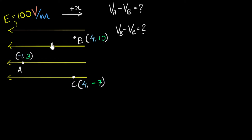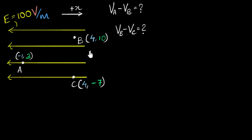In a previous video, we've seen what that connection is. We realized that electric field is a negative potential gradient. If you're not familiar with this connection, feel free to pause this video, go back and watch that video, revise the concepts, and come back.